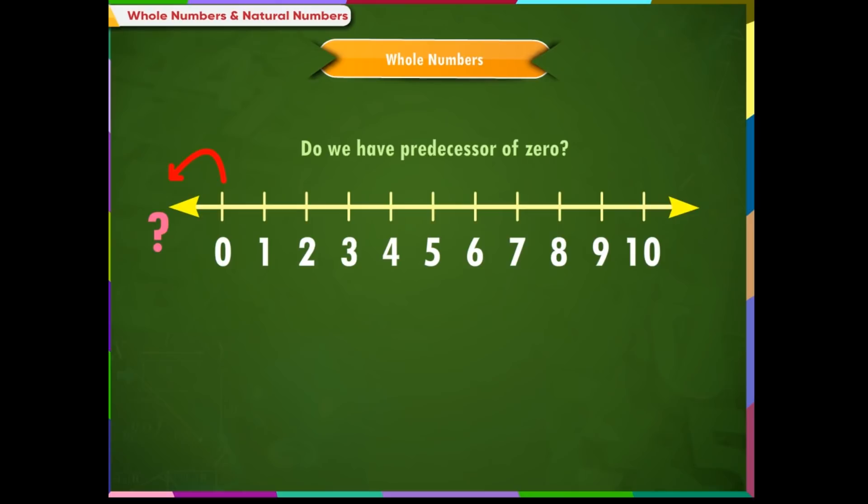Do we have a predecessor of 0? No, we don't have any predecessor of 0, which is a whole number.